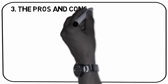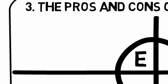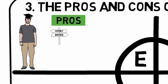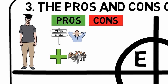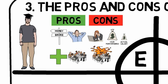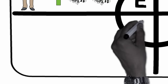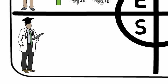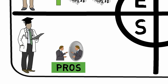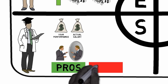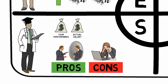Takeaway number 3: the pros and cons of the quadrants. E, the employee. Pros: reduced financial uncertainty, paid vacation, health insurance and other benefits, and colleagues. Cons: success means more work and less free time, and your performance is often higher than your salary. S, the small business owner. Pros: you are your own boss, and you're paid according to performance. Cons: success means more work and less free time, financial uncertainty, and you might lose money.